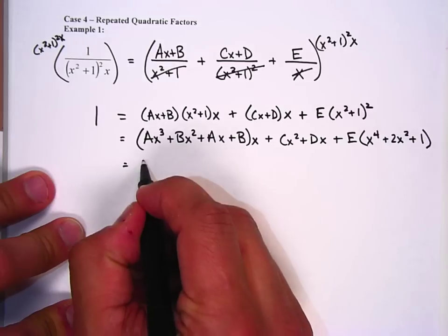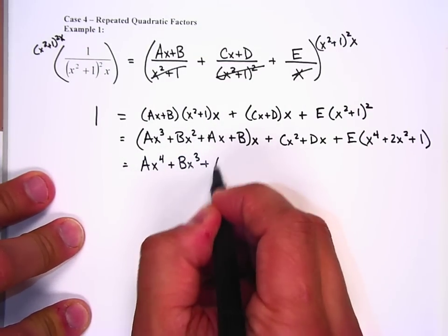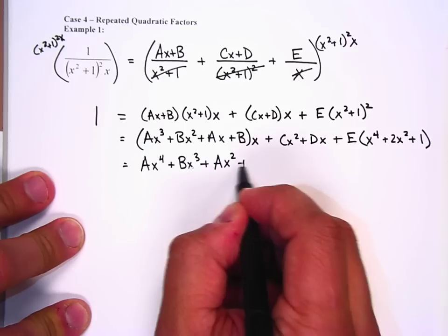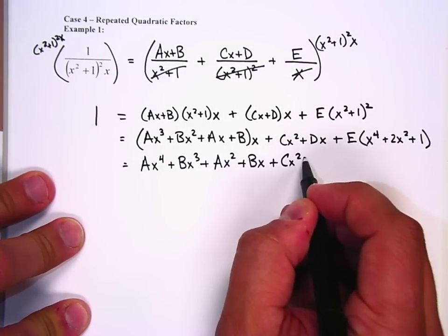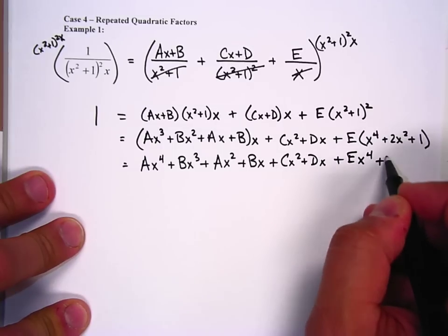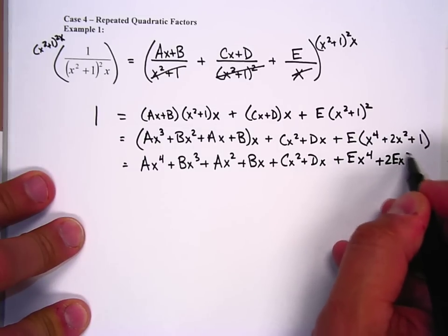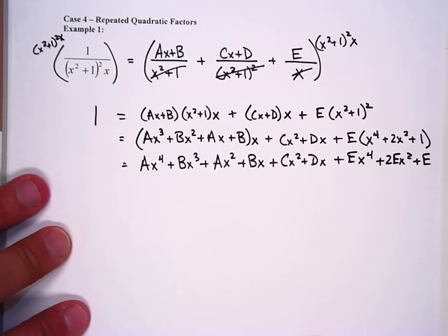Distribute that x. Ax to the fourth plus bx cubed plus ax squared plus bx plus cx squared plus dx plus ex to the fourth plus 2ex squared plus e. This one is definitely a doozy. Alright.